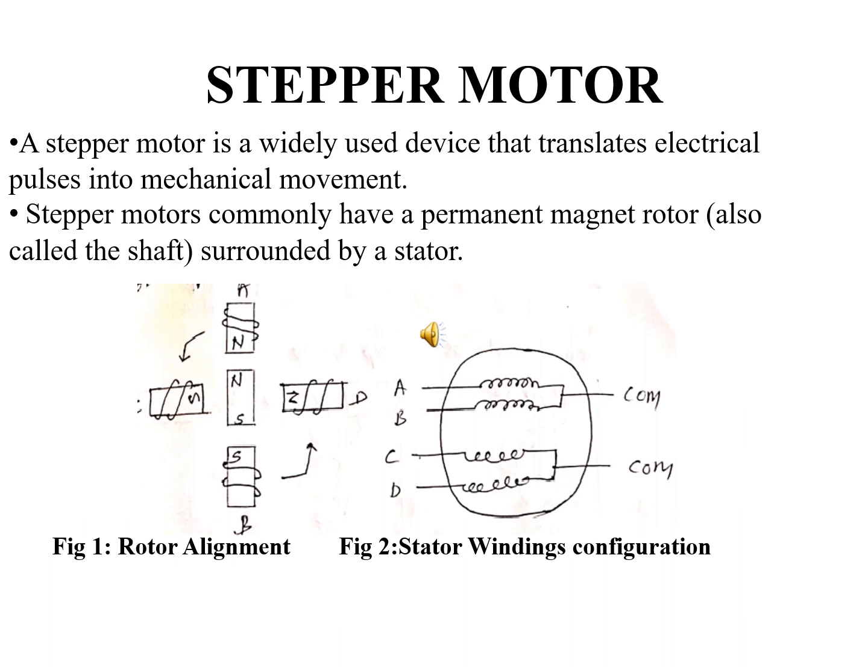The direction of rotation of the stepper motor is mainly controlled by the stator poles, and the stator poles are determined by the current sent through the wire coil. As the direction of the current is changed, the polarity is also changed, resulting in the reverse rotation of the stepper motor.